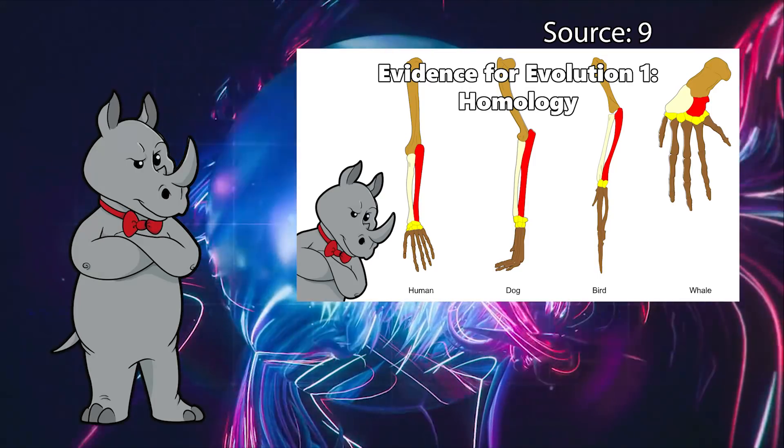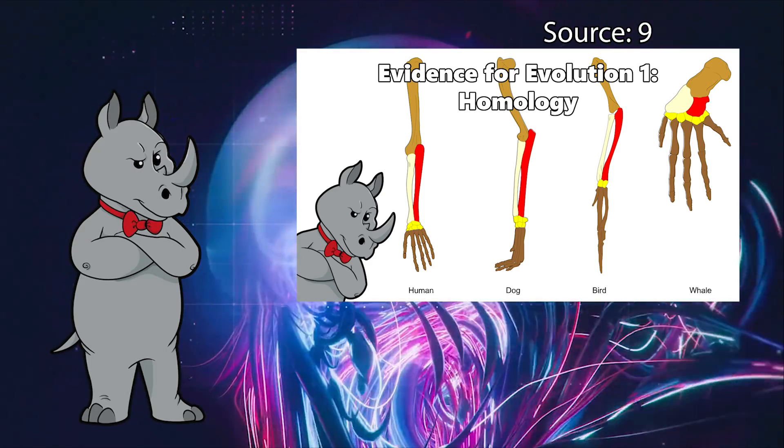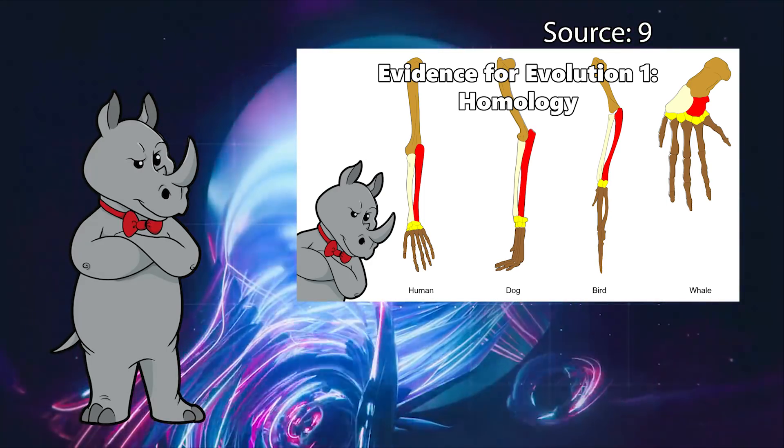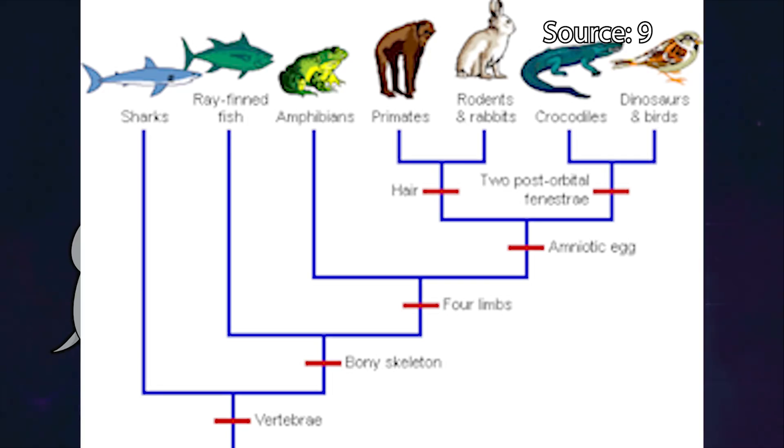This takes us back to homology. Using the different methods that we have at our disposal, we can determine whether a character we are looking at is similar because of ancestry, or whether it developed all on its own. And when you arrange animals by their shared derived characters that are determined to be homologous, it ends up looking remarkably like a phylogeny.